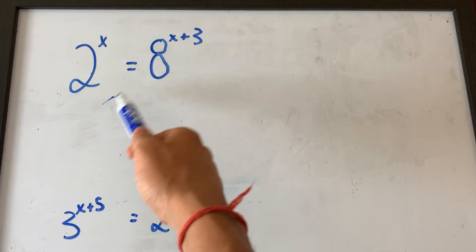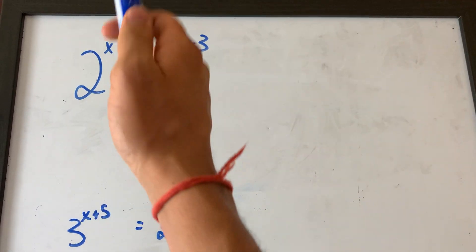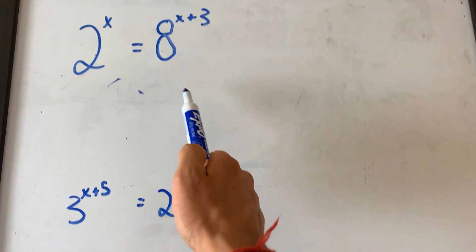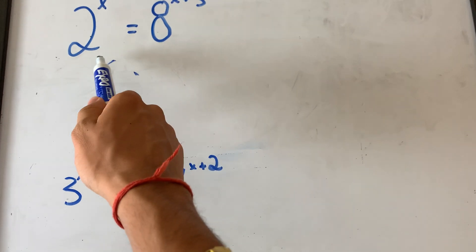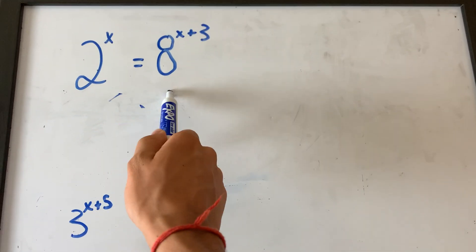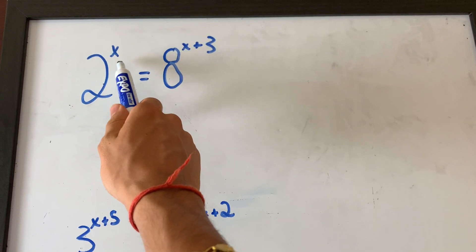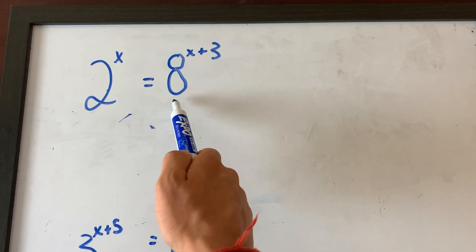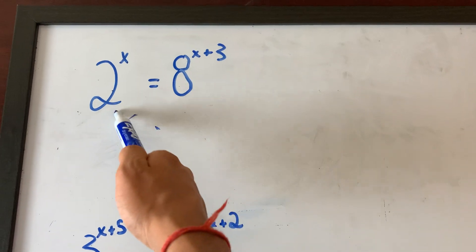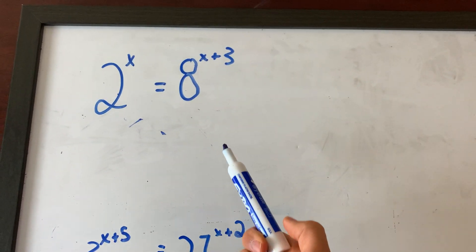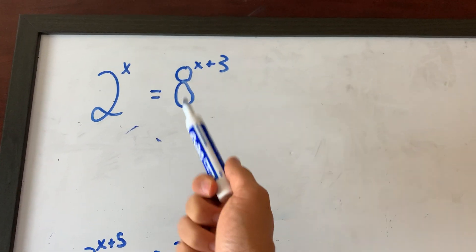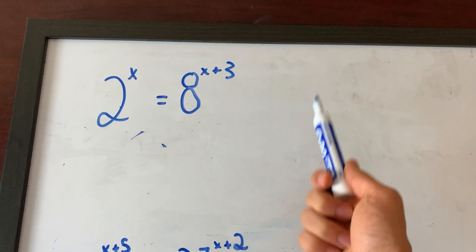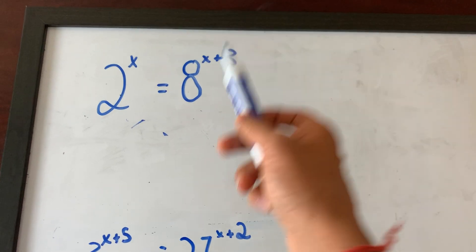You look at this and you're probably thinking: alright, I know that when the bases are similar I can just set the exponents equal to each other. But the bases aren't similar — one is two, one is eight. So how can I make the bases similar in order to solve for x?